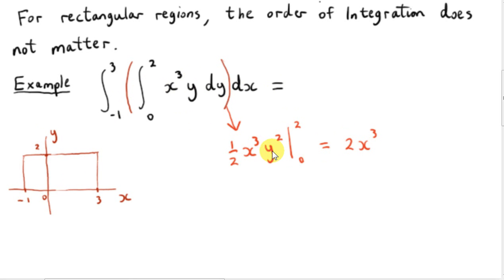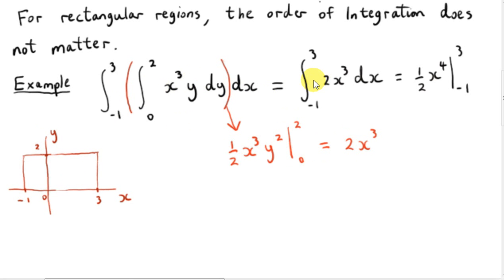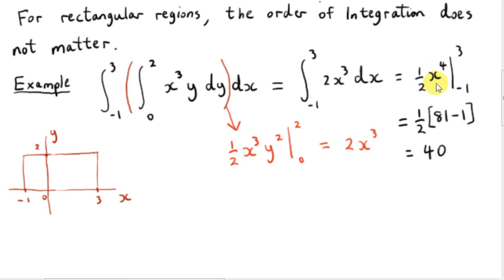Plugging in y equals 0 gives us 0. Next, we integrate 2x cubed with respect to x from x equals minus 1 to x equals 3. We add 1 to the power of 3 to get 4, giving us 2 quarters, or a half x to the power of 4. Working this out, we get 40.